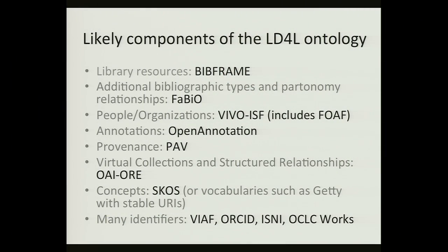A note about the LD4L ontology: we're using BibFrame for library bibliographic information, Fabio for additional bibliographic types and relationships, VIVO and ISF for people and organizations — which includes the Friend of a Friend ontology. We're using the Open Annotation standard for annotations, PAV for provenance, OAI-ORE for virtual collections and structured relationships, SKOS as a standard ontology for concepts, and we're trying to leverage many different global identifier relationships.